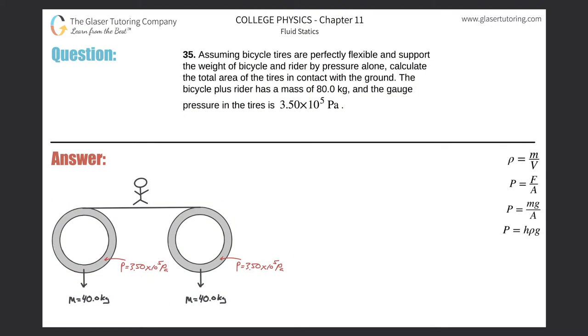Number 35. Assuming bicycle tires are perfectly flexible and support the weight of bicycle and rider by pressure alone, calculate the total area of the tires in contact with the ground. The bicycle plus rider has a mass of 80 kilograms and the gauge pressure in the tires is 3.5 times 10 to the 5 pascals.